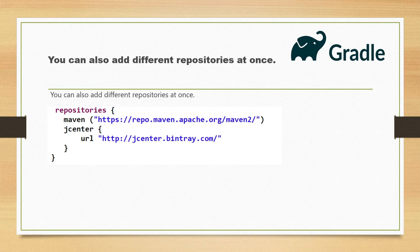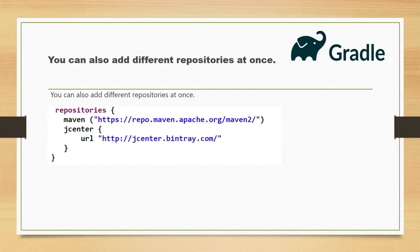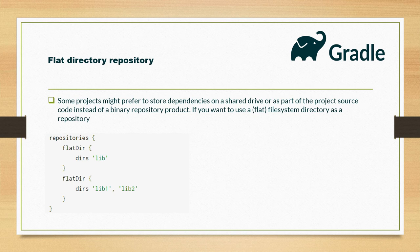Now, if you want to declare more than one repository at a single place, here you can see that in the repositories section, rather than specifying just one, you can list multiple repositories your project depends on. Like the Maven repository, you write maven and specify the central repository URL of Maven, and similarly you can specify JCenter and Ivy as well. This is the way to specify more than one central repository within the repositories block in Gradle.